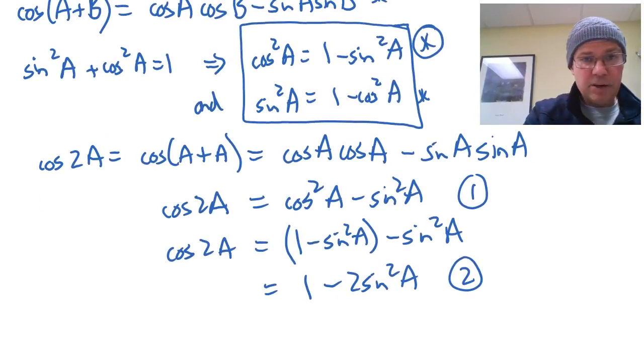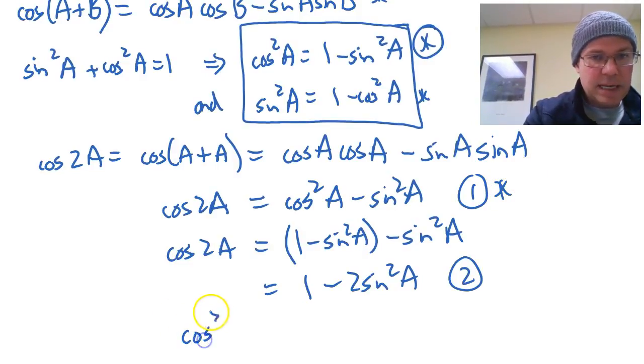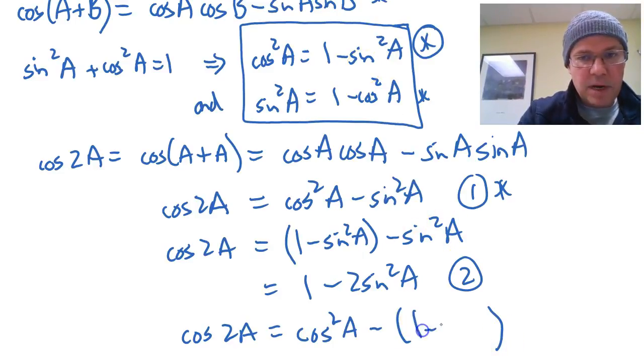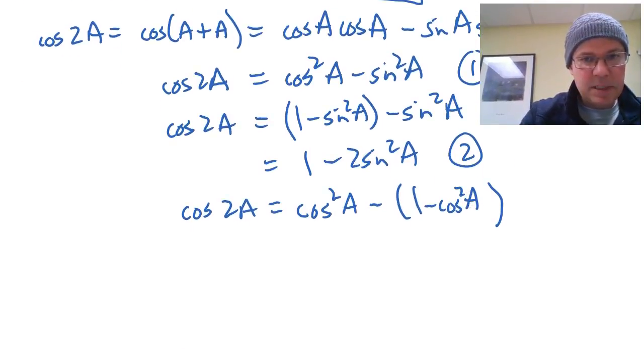Now of course if I go back to my equation one here, cos squared A minus sin squared A. And if I use my other equation, one minus cos squared, so this time keep the cos squared A minus, and put it in a bracket because you want to be careful with your negatives, swap the sin squared for a one minus cos squared A. Be careful with the bracket there, easy to make a mistake.